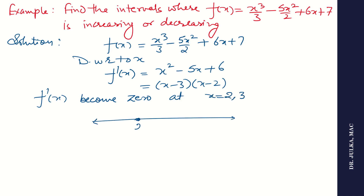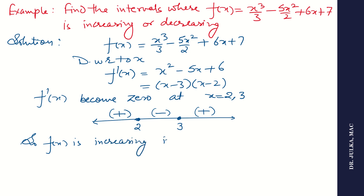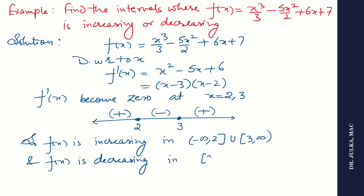We will take 2 and 3 both as inclusive values. If we take any value less than 2, the first derivative is positive. If we take any value between 2 and 3, it is negative. If we take any value after 3, the first derivative is positive, so the function is increasing. So the function is increasing in minus infinity to 2 or 3 to infinity, and decreasing in 2 to 3. Because we are talking about increasing or decreasing, we take 2 and 3 as inclusive values.